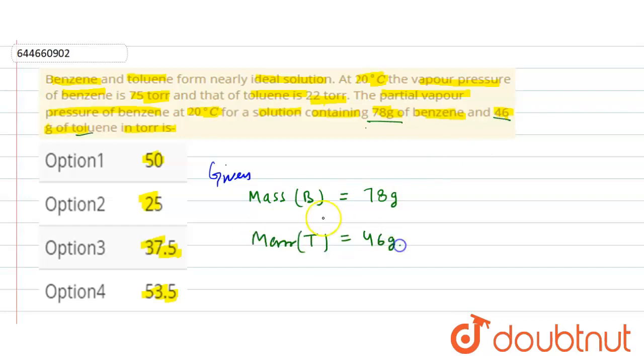So by using this, we will calculate number of moles of benzene and number of moles of toluene first.